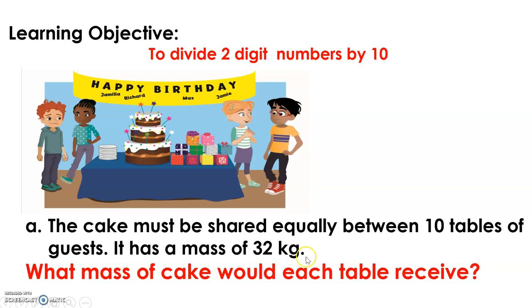It has a mass of 32 kilograms. What mass of cake would each table receive? Let's take this equation: 32 divided by 10, since we are talking about 32 kilograms of cake and it should be shared with 10 tables of guests. We are looking for the answer for this.